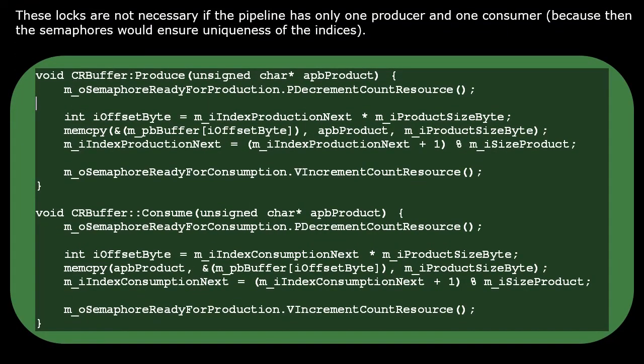If our system contains only one producer thread and only one consumer thread, then we're all done with the implementation. The semaphores perform all the synchronization that we need. But in general, we could have multiple producers and or multiple consumers. In that case, we need to add a lock that protects the critical section.